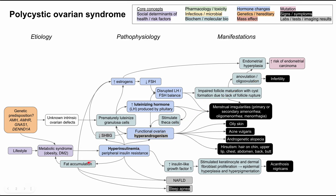There are some other manifestations associated with type 2 diabetes, metabolic syndrome, and fat accumulation — specifically non-alcoholic fatty liver disease and sleep apnea, which can present in PCOS as well. There are also non-specific symptoms related to all of the other symptoms here; psychological disorders like depression and anxiety are associated with PCOS as well.